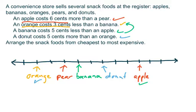And that takes care, I believe, of all the snack foods they mentioned. We have the apples, we have the bananas, we have the oranges, the pears, and the donuts all listed there. And although we don't have exact prices, we have relative prices. What's cheapest, what's next cheapest, and so forth.